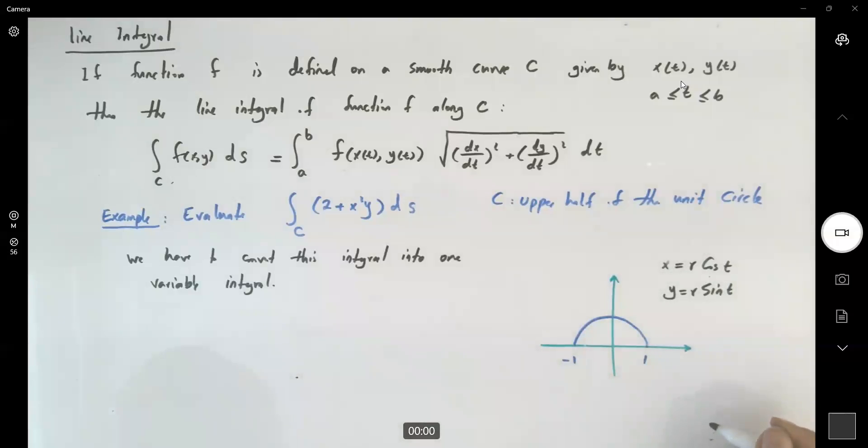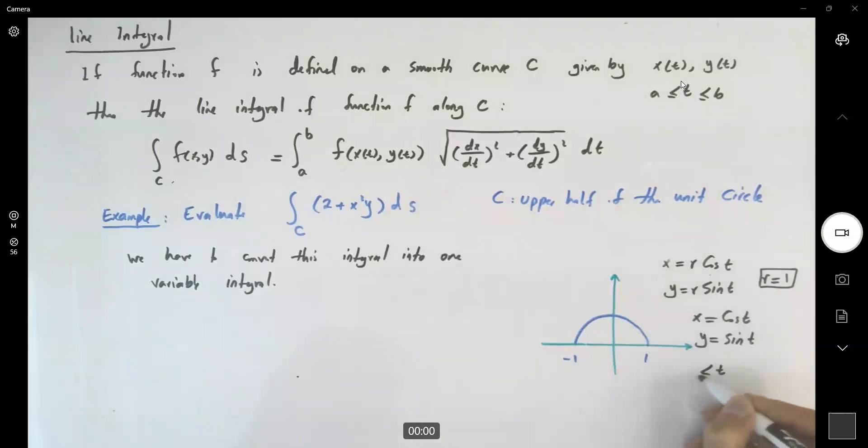Well, you have a unit circle. r is equal to one. So x is just cosine t, y is just sine t, and t is bounded between zero and pi.